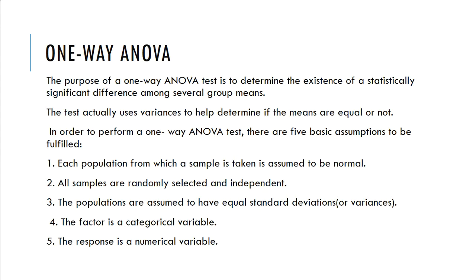The test actually uses variance to help determine if the means are equal or not. In order to perform a one-way ANOVA, you have to have five basic assumptions. The first, each population from the sample is taken is assumed to be normal.